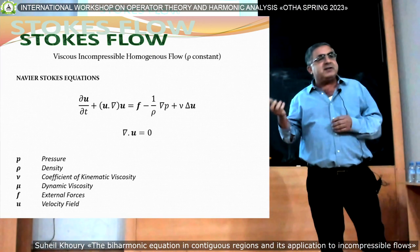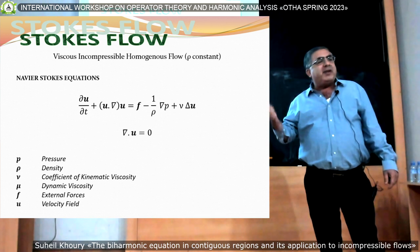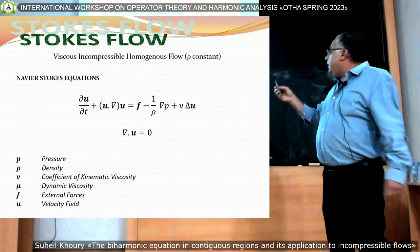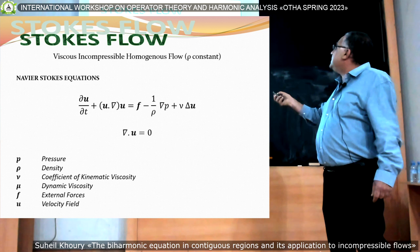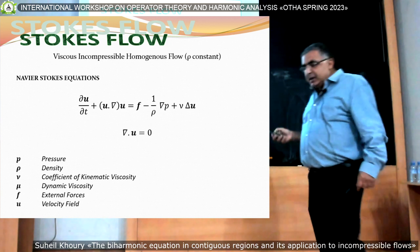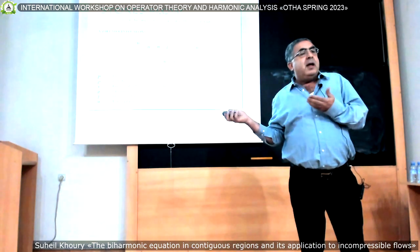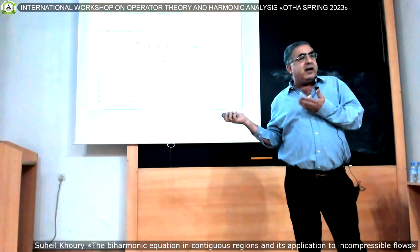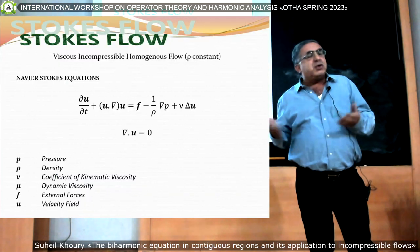Let's consider the basic equations of fluid dynamics: the Navier-Stokes equations, which are derived from the conservation laws of mass, momentum, and energy. These are the Navier-Stokes equations for viscous incompressible homogeneous flow. Rho is constant — the density. Here are pressure P and density rho. These equations are highly nonlinear, and finding exact solutions is almost impossible.